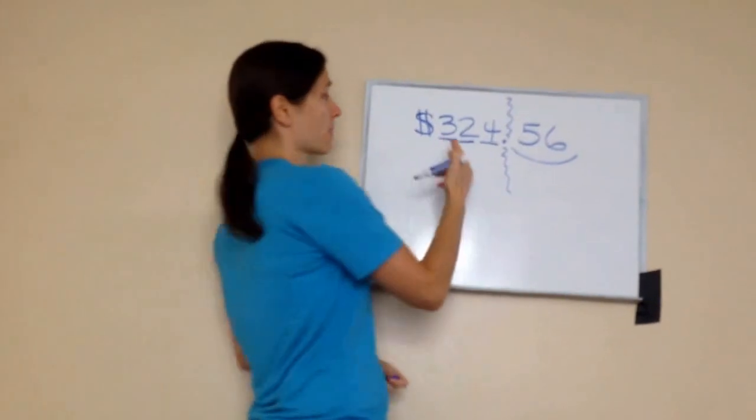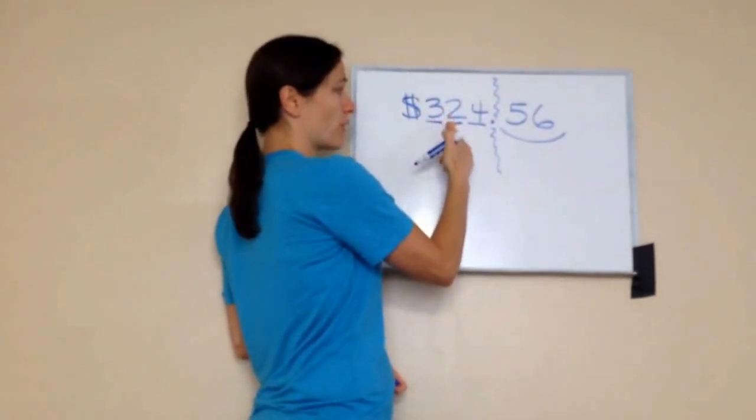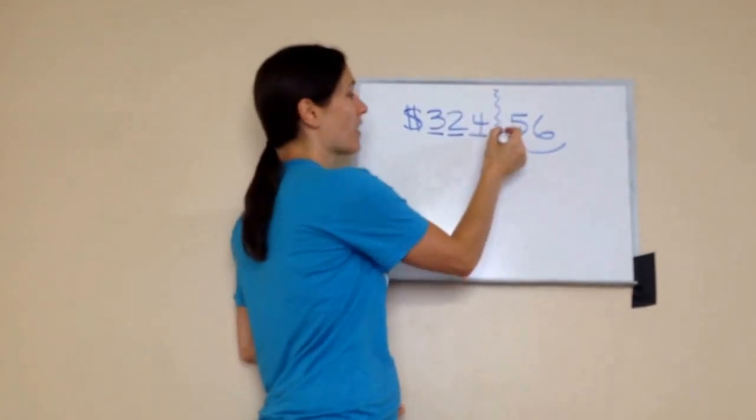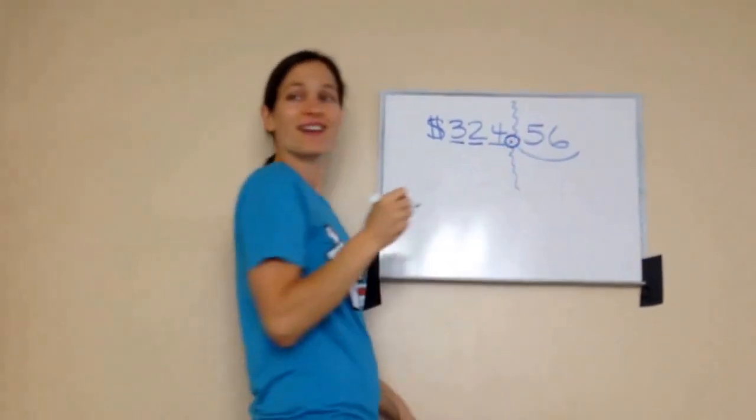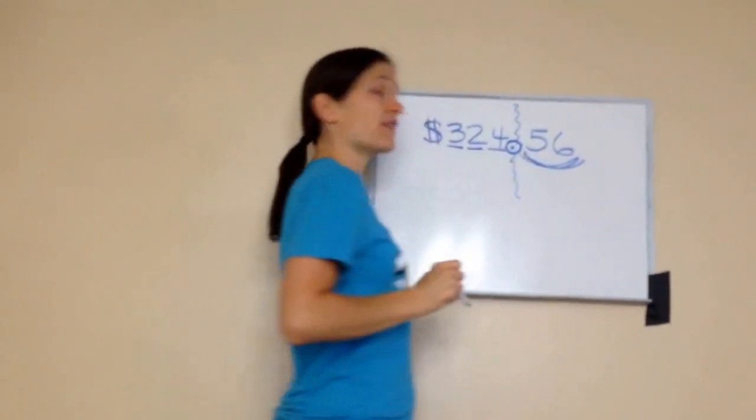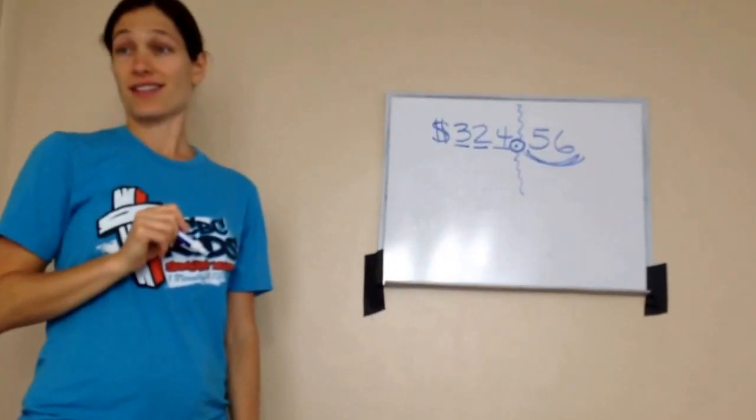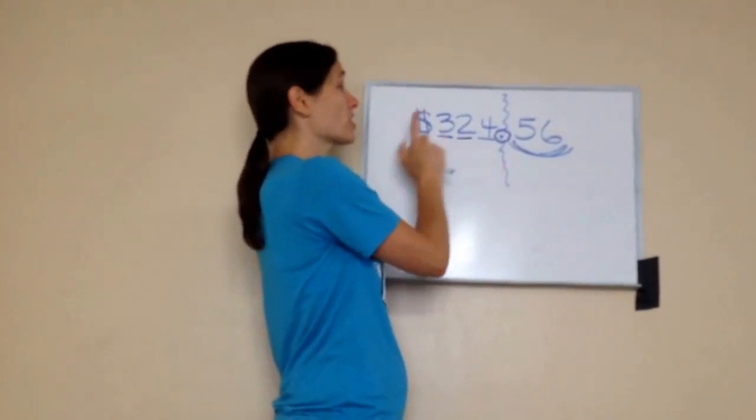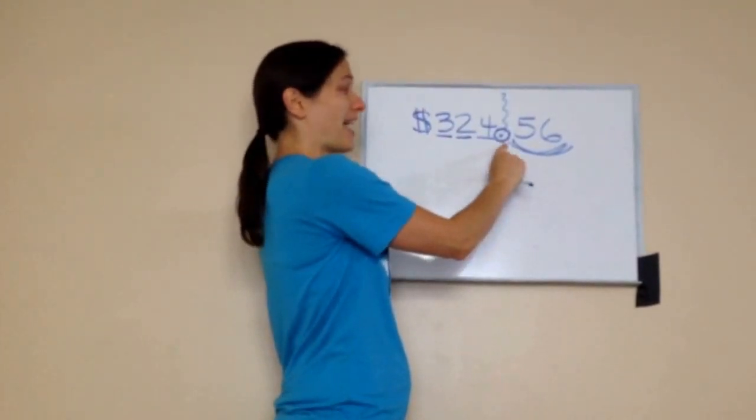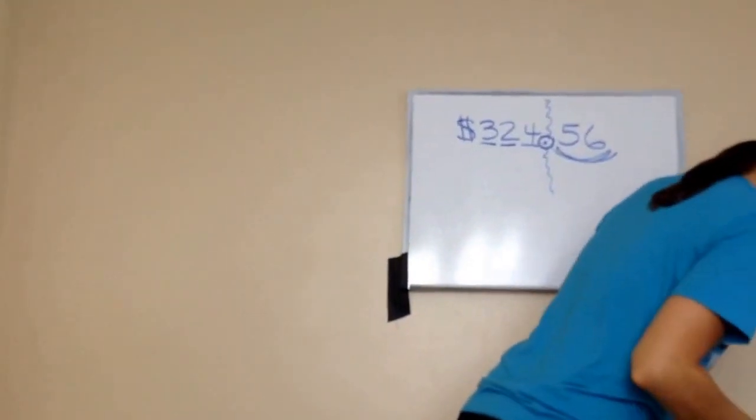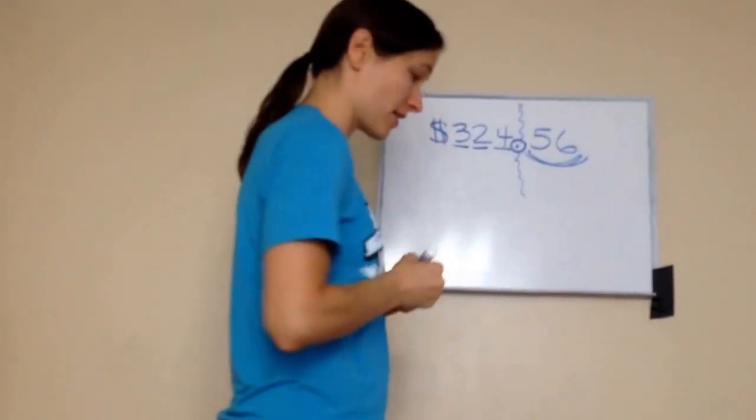So we'll actually read this. Three hundred twenty four dollars. And what does this one mean? And. And then you just read this number. Fifty six cents. Got it? Try it with me. Three hundred twenty four dollars. And. Fifty six cents. Good job. That's exactly how you would say that.